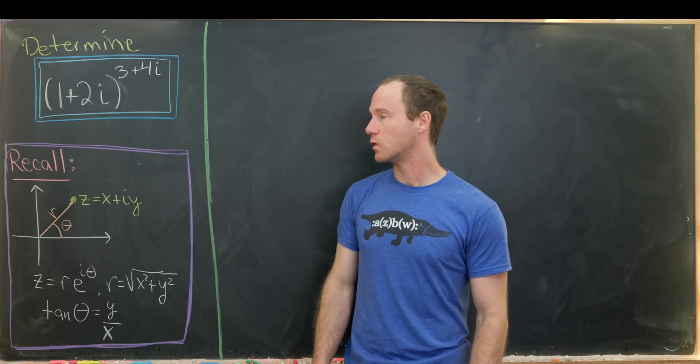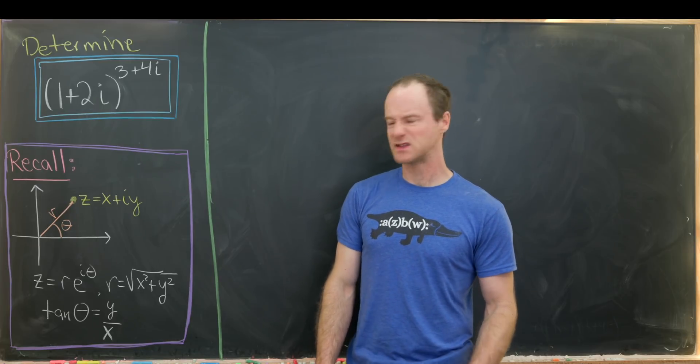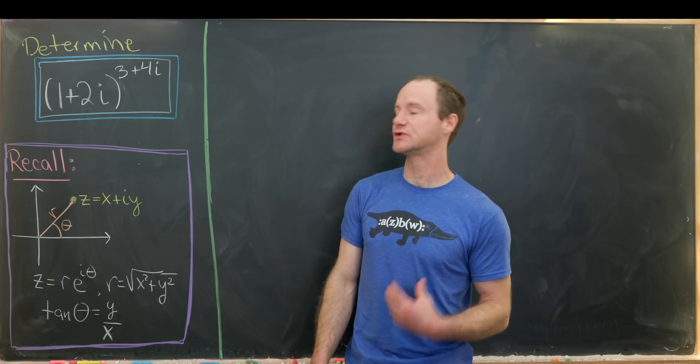And in order to do this, we're going to use the polar form for a complex number. And sometimes this is given in a complex exponential format, which is what we'll use.